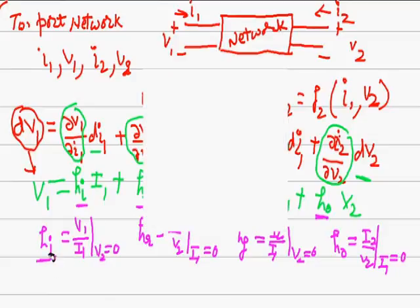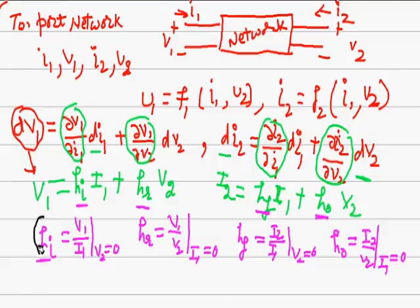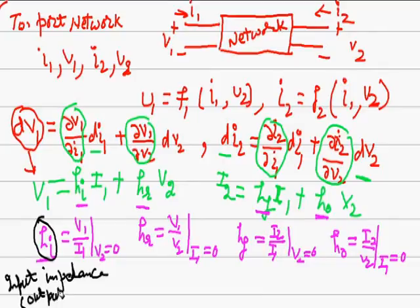The H coefficients are known as the hybrid parameters. They are called hybrid because, like HI is input impedance when output is shorted, meaning V2 equals zero. They are called hybrid because they are of mixed units.